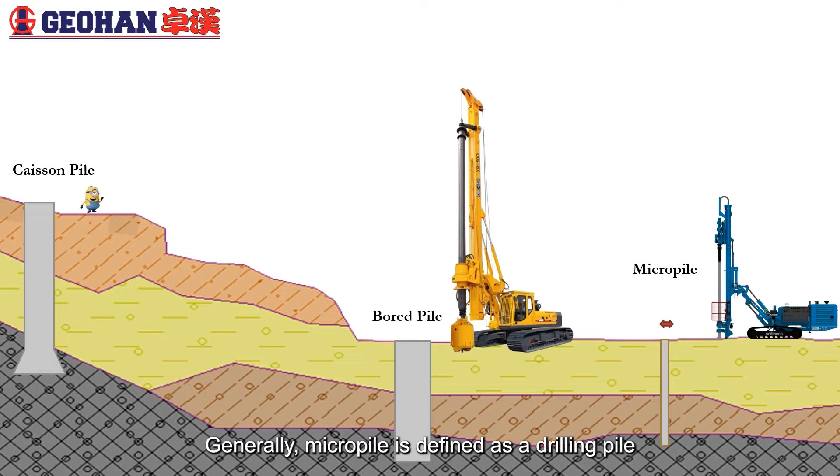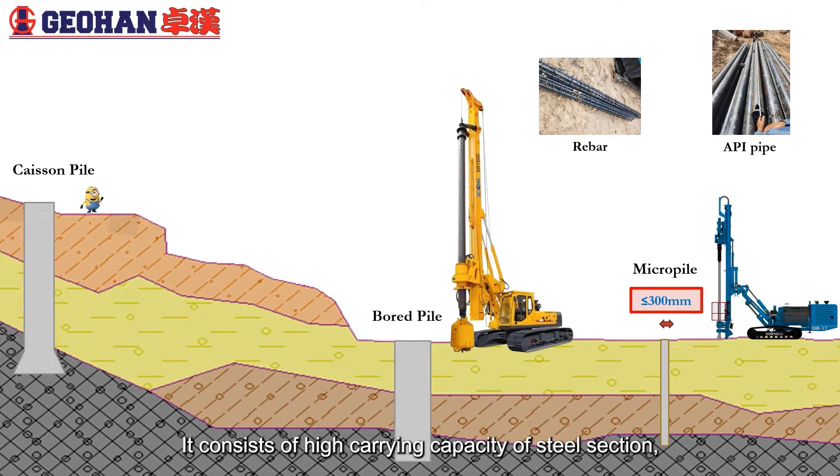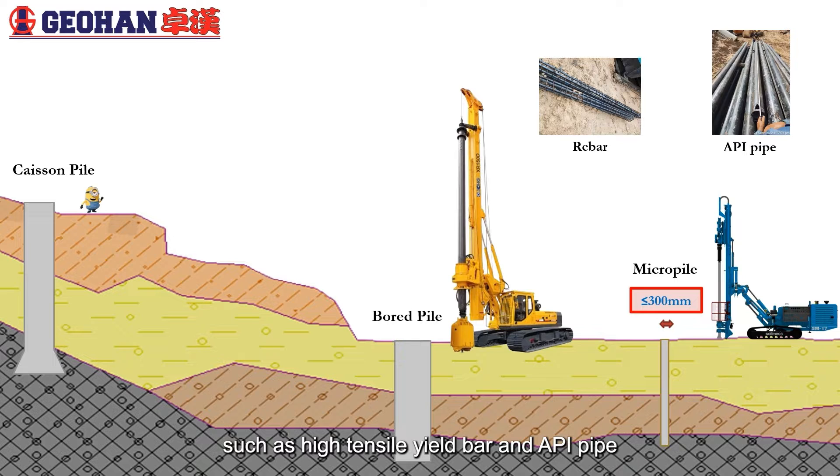Generally, MicroPile is defined as a drilling pile with diameter smaller or equal to 300mm. It consists of high carrying capacity of steel section, such as high tensile U-bar and API-5.